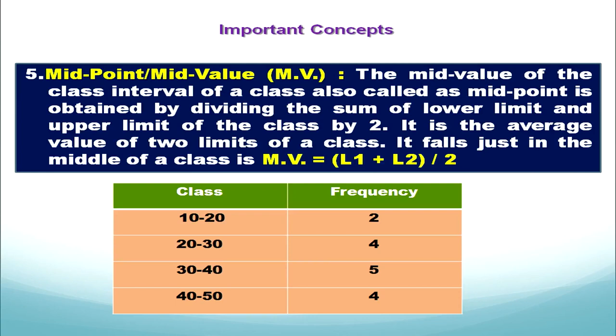For example, the first class is 10 to 20. The lower limit is 10 and the upper limit is 20. We add both limits: 10 plus 20 equals 30. Then we divide 30 by 2, giving us a mid value of 15. For the next class, lower limit is 20 and upper limit is 30, so 20 plus 30 equals 50, divided by 2 gives 25.